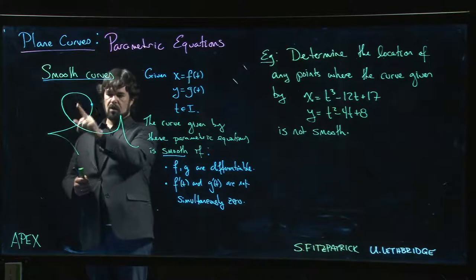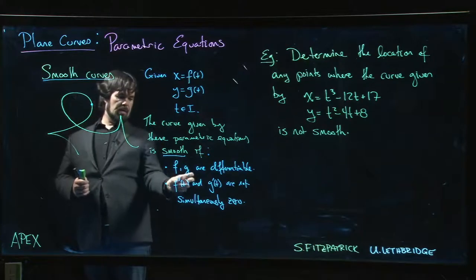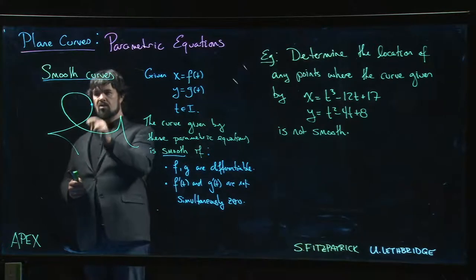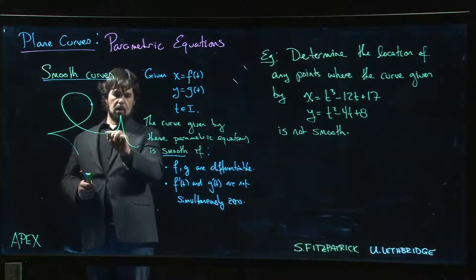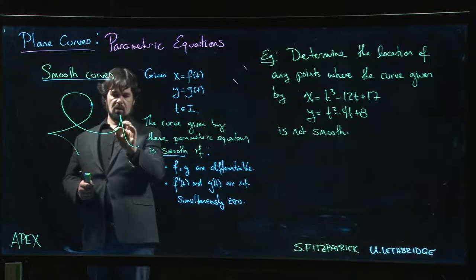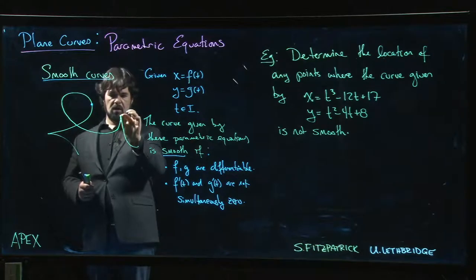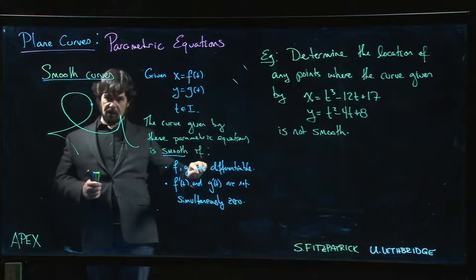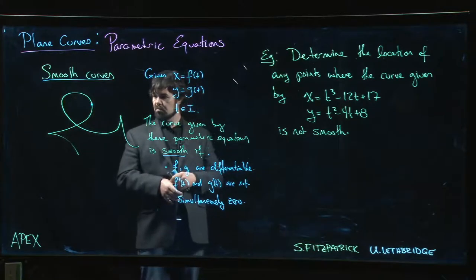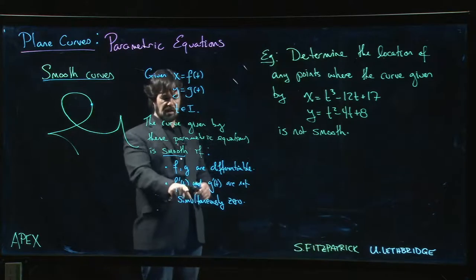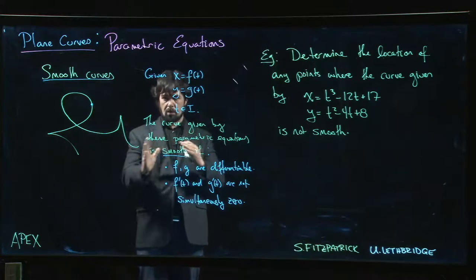The reason you don't want to allow simultaneous zeros here is you can keep differentiable functions, but if you imagine as you approach that cusp, f prime of t and g prime of t approach zero, so you kind of slow down, you come to a stop, and then when you start moving again you go off in a different direction.